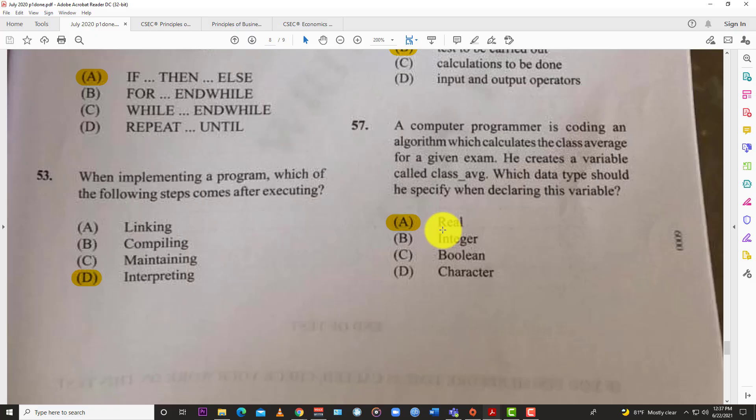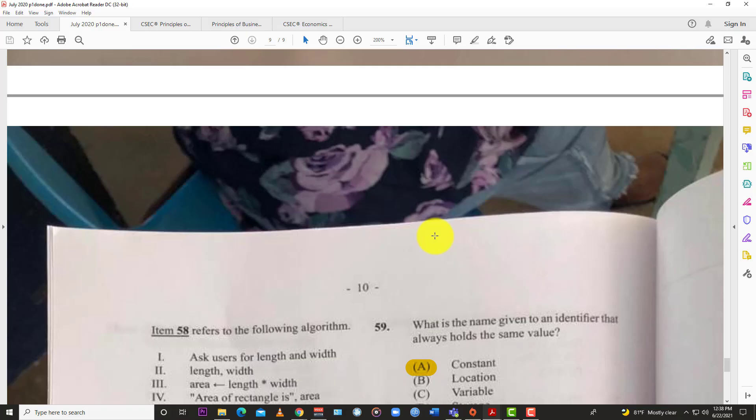Question 57: A computer programmer is coding an algorithm which calculates the class average for a given exam. He creates a variable called class underscore average. Which data type should he specify when declaring this variable? The answer here is of course A, real, because you want the real numbers.